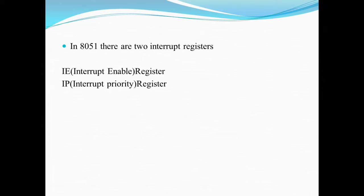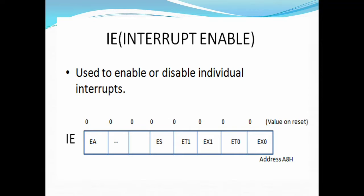Let us first discuss the use of the IE register. Upon reset, all the interrupts are disabled — they are masked — meaning none will be responded to by the microcontroller if they are activated. Therefore, these interrupts must be enabled by software in order for the microcontroller to respond to them. For setting these individual interrupts, we use the IE register. Its main use is for enabling or disabling individual interrupts.